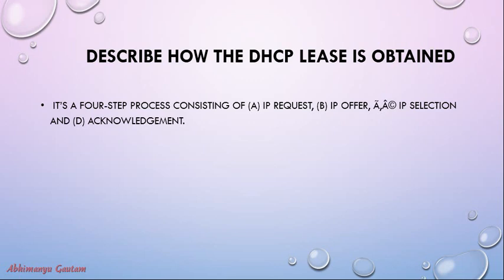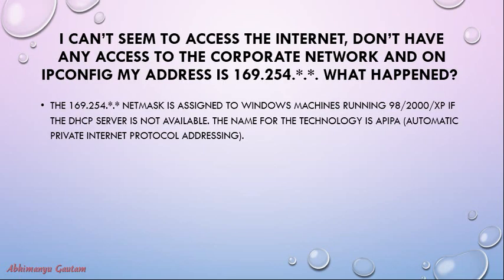First question: describe how a DHCP lease is obtained. It's a four-step process consisting of IP request, IP offer, IP selection, and acknowledgement.